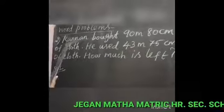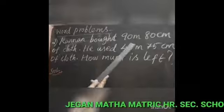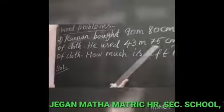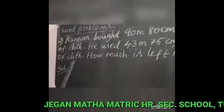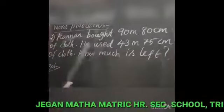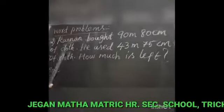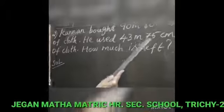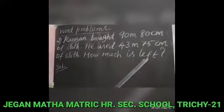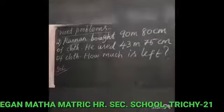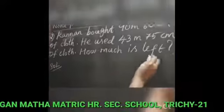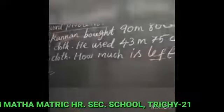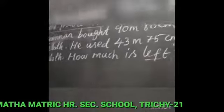Now let us see the second problem. Kannan bought 90 meter 80 cm of cloth. He used 43 meter 75 cm of cloth. How much is left? What is given: the total measurement of the cloth is given. He used only 43 meter 75 cm, so what is the balance — they are asking what is remaining. Left means balance, so you have to subtract.